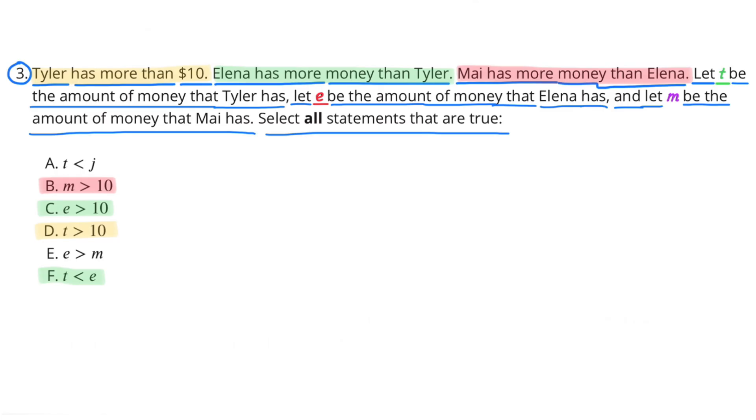I selected C: E is greater than 10 because Elena has more money than Tyler, and Tyler has more than $10. I selected D: T is greater than $10, because Tyler has more than $10.